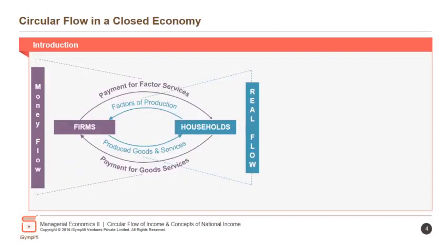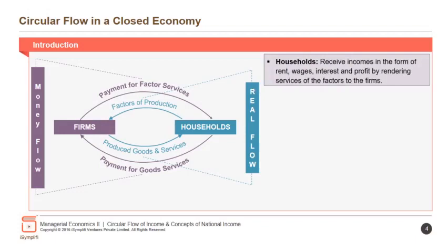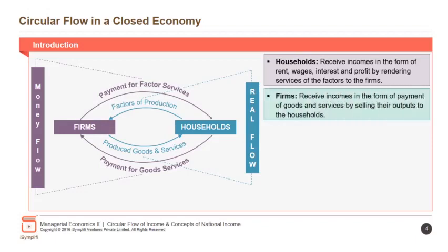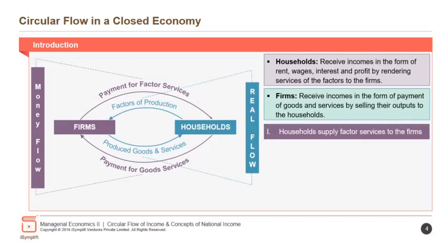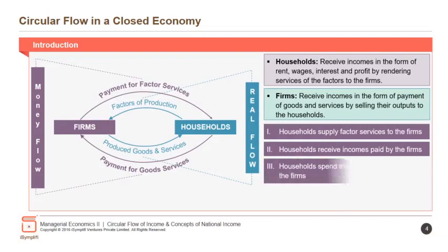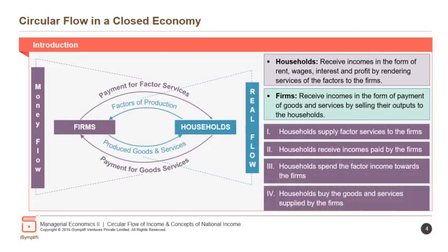In the circular flow in a closed economy, households receive incomes in the form of rent, wages, interest and profit by rendering services of the factors to the firms. Firms receive incomes in the form of payments for goods and services by selling their outputs to households. Households supply factor services to the firm, receive incomes paid by the firms, spend the factor income towards the firms, and buy the goods and services supplied by the firms.